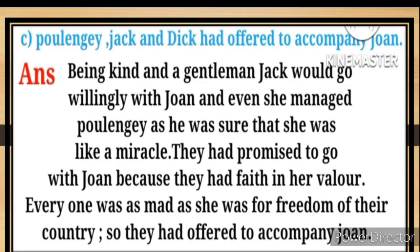Answer (c): Jack would go willingly with Joan and even she managed Polly, as he was sure that she was like a miracle. They had promised to go with Joan because they had faith in her valor. Everyone was as mad as she was for freedom of their country, so they had offered to accompany Joan.